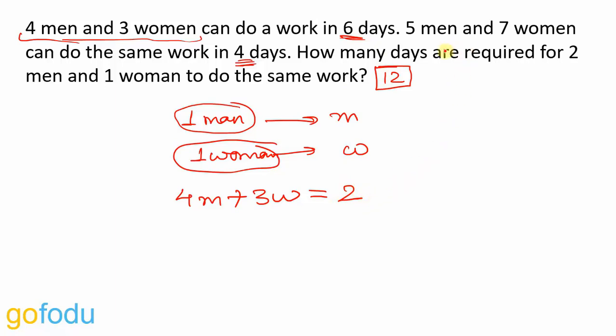Similarly we can say five men and seven women are doing same 12 units of work in four days. So 5M plus 7W, this is one day's work, which will be equal to 12 upon 4. In four days they finish 12 units, in one day they will be doing 12 upon 4 that is 3 units.